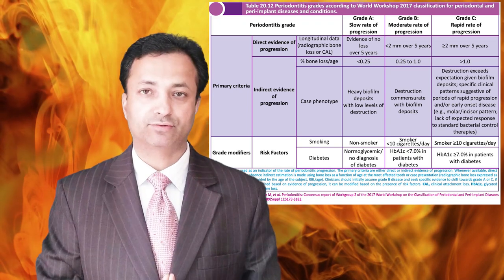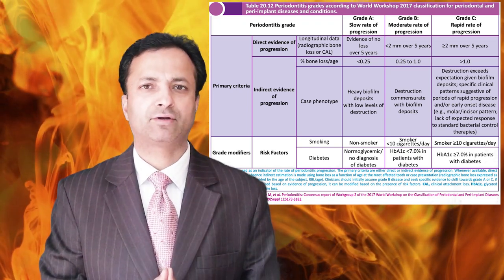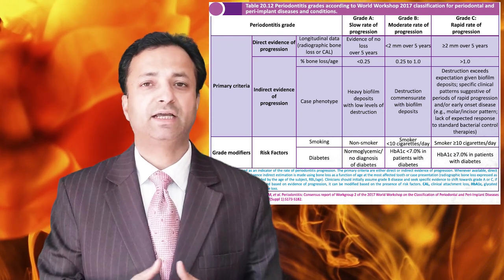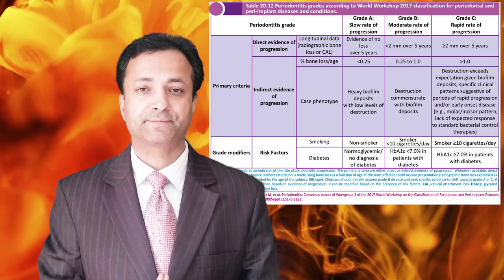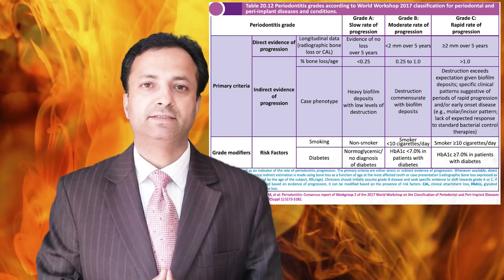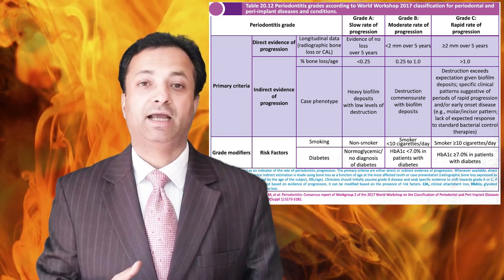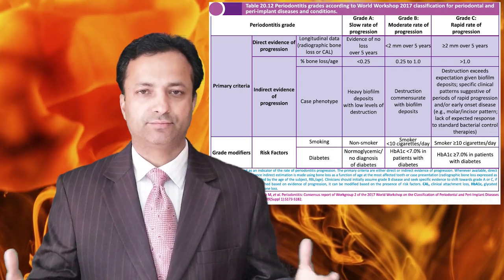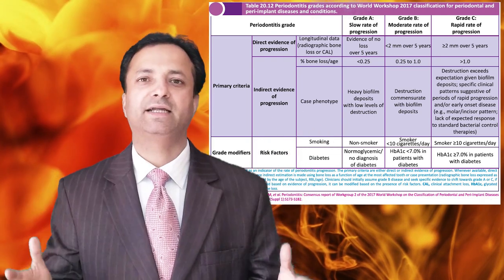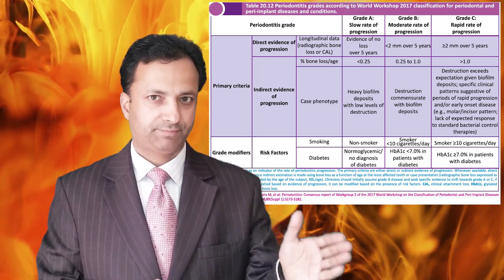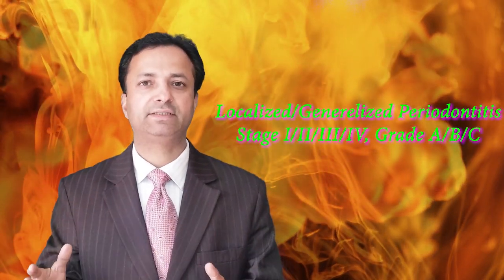Secondly, case phenotype is assessed: heavy deposits with minimal or no bone loss is Grade A; bone loss commensurate with local factors is Grade B; severe bone loss in the absence of local factors is Grade C. Grade modifiers include diabetes and smoking — an uncontrolled diabetic patient automatically goes to Grade C, and a patient smoking more than 10 cigarettes per day also automatically goes to Grade C. When giving a diagnosis, first write periodontitis (generalized or localized), then the stage, then the grade.